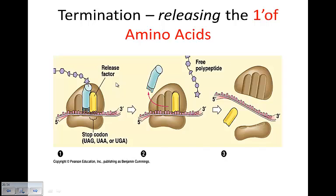Termination occurs when the termination codon reaches the A site. The release factor enzyme enters the A site, causing a hydrolysis reaction — water is added and the bond is broken — releasing the protein from the last transfer RNA molecule sitting in the P site. After hydrolysis, the protein detaches and the subunits separate. Once the termination factor has been received, the subunits break apart from each other and are able to be reused. The messenger RNA can also be reused to make more of the particular protein, or it can be broken down and the nucleotides recycled.